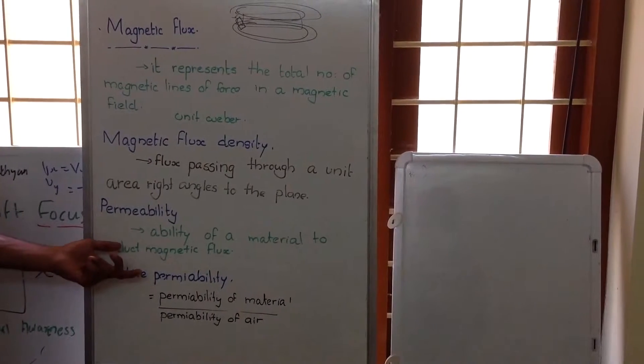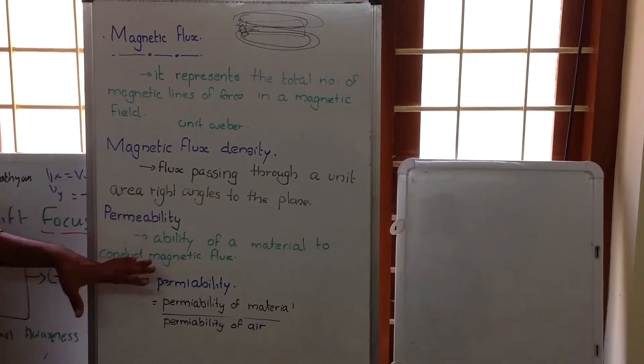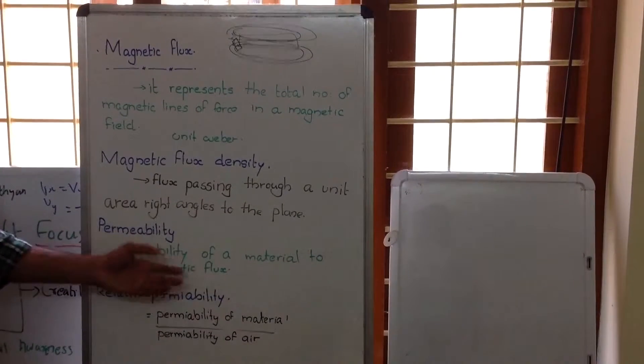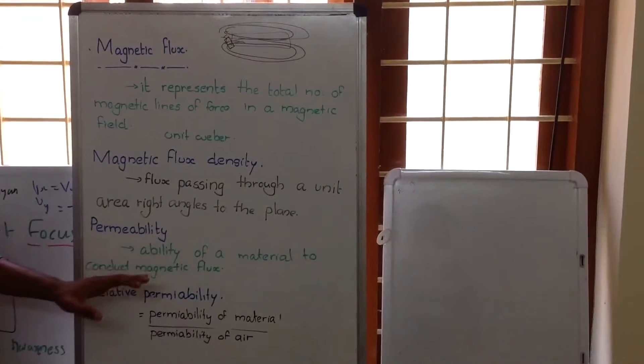Permeability means the ability of a material to conduct the magnetic flux, similar to conductance in the case of electricity.